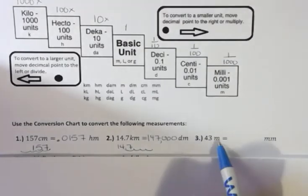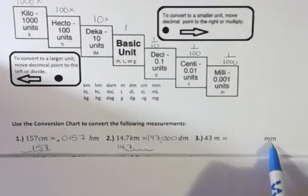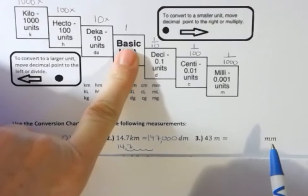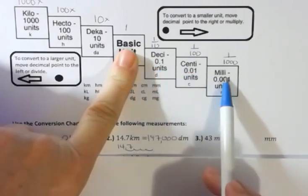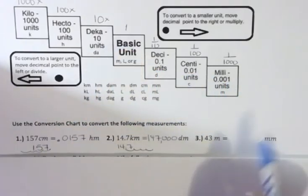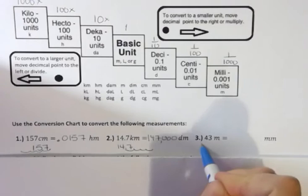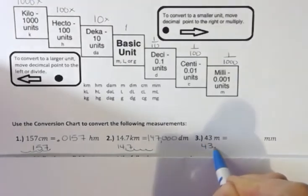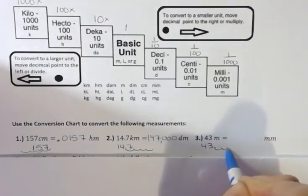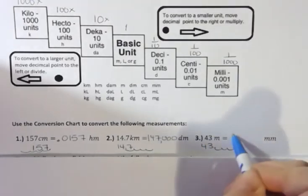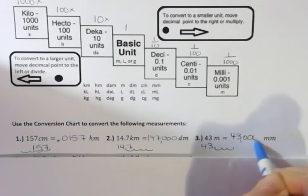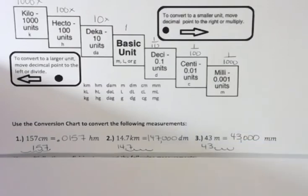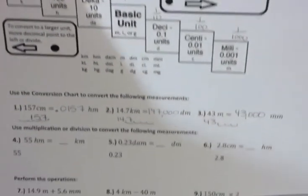For the last chart example, I have 43 meters and I want to convert to millimeters. Millimeters is three places to the right of meters, so I move my decimal point one, two, three places to the right and get 43,000 millimeters.